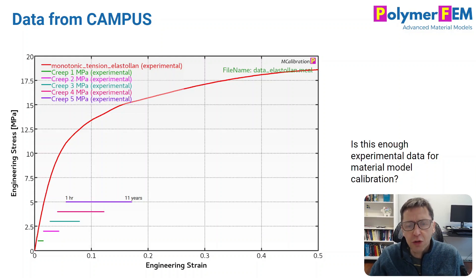The question though to always keep in mind when you have data like this: is this enough? Is this enough data to calibrate a viscoplastic material model? Or what material can we use for this data? So you should always think about that as you work with these data sets.